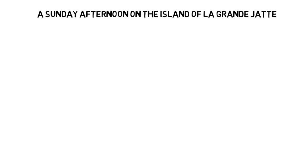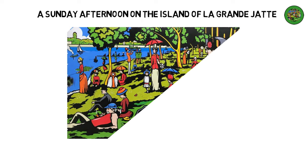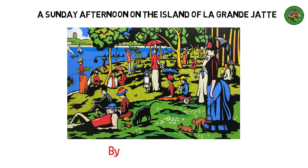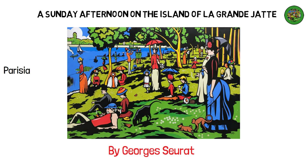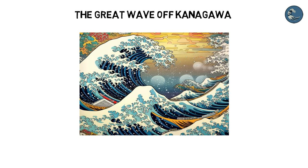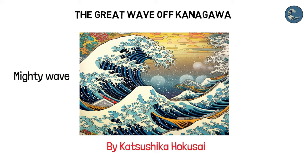A Sunday Afternoon on the Island of La Grande Jatte by Georges Seurat, an example of pointillism capturing Parisian life, leisure, and the play of light. The Great Wave off Kanagawa by Katsushika Hokusai, a ukiyo-e woodblock print depicting a mighty wave, emblematic of the power of nature.